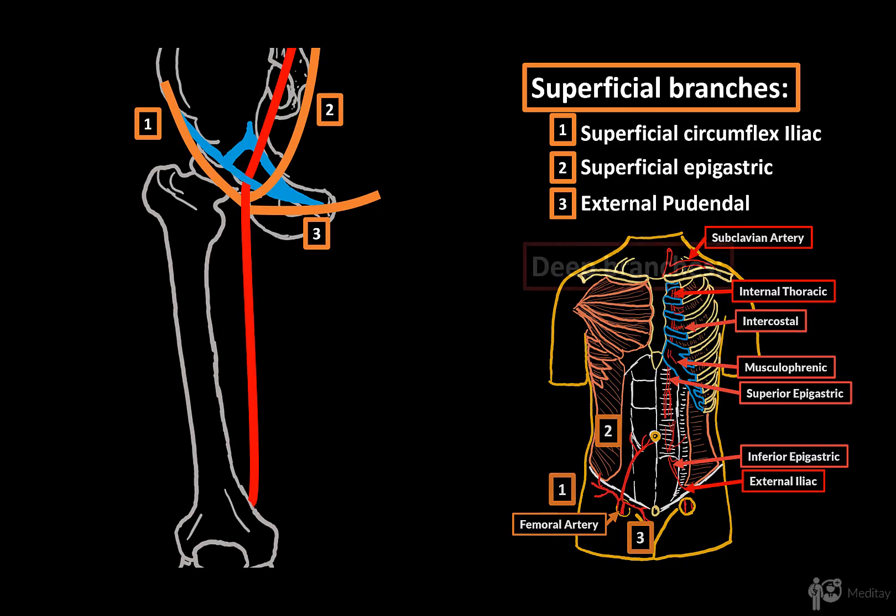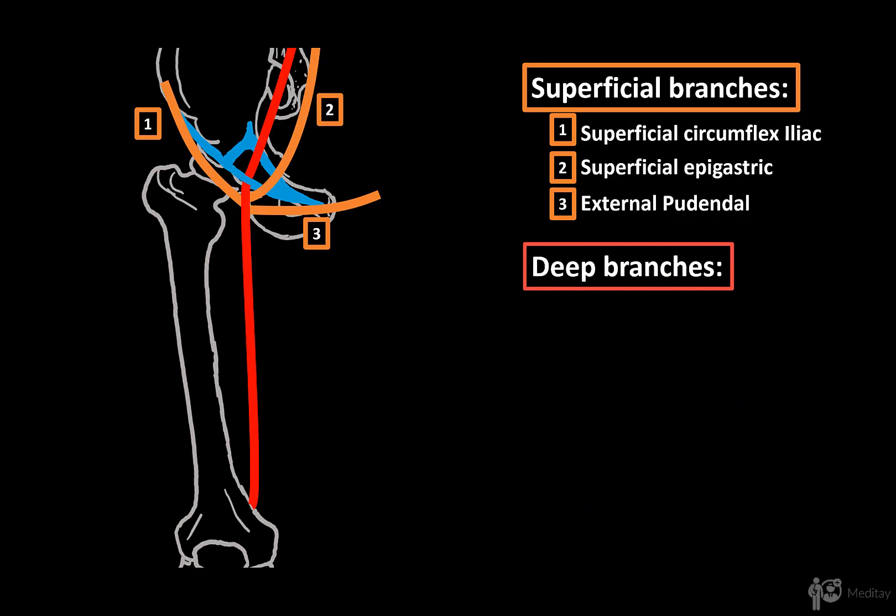So that was the external branches. Now let's cover the deep branches of the femoral artery. There are two deep side branches. The first one is the deep femoral artery, which leaves the femoral artery at about 3-4 cm below the inguinal ligament, and then descends behind the femoral artery and supplies the muscles of the thigh.